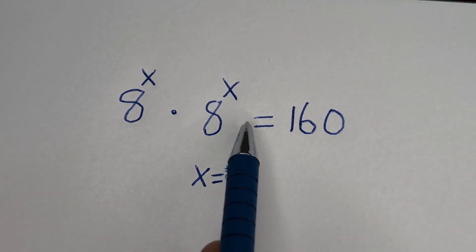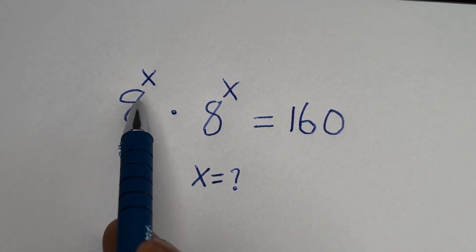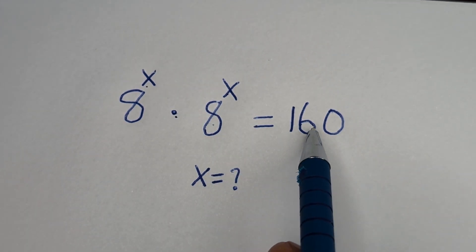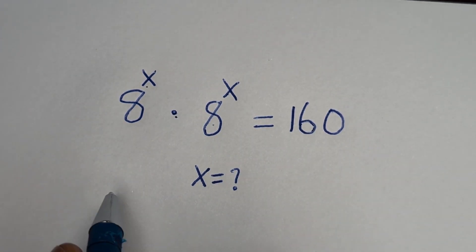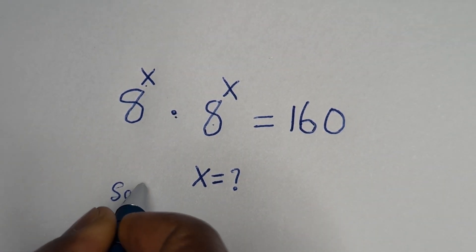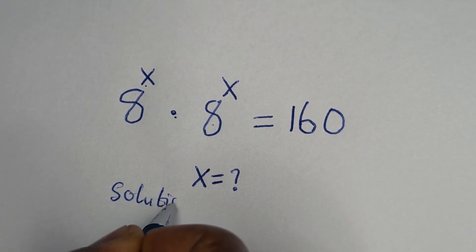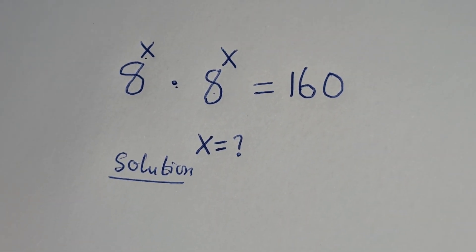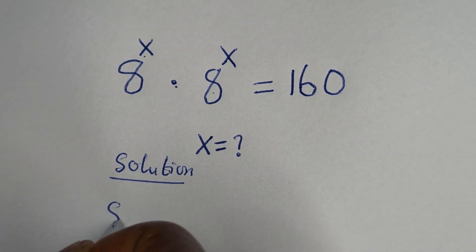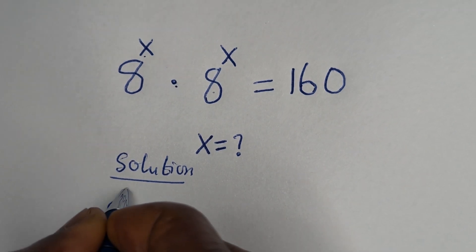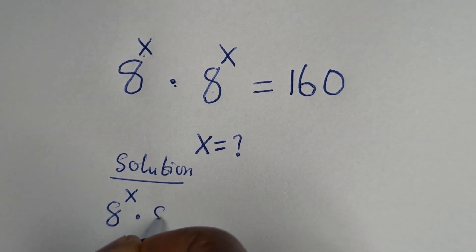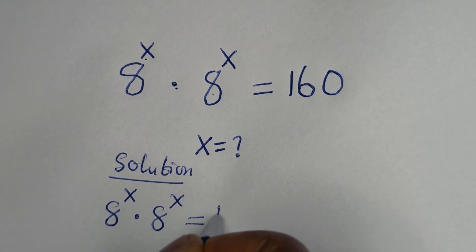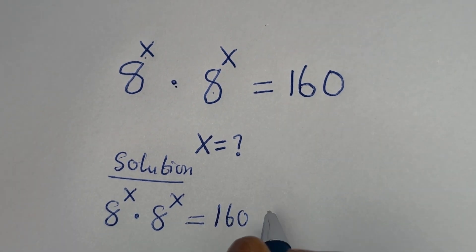What is the value of s in this equation: a raised to power s multiplied by a raised to power x is equal to 160? Here we have a raised to power x multiplied by a raised to power s is equal to 160.